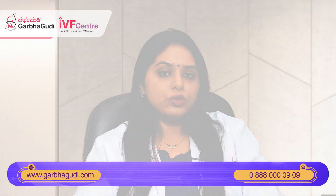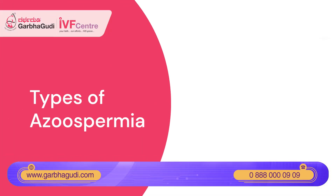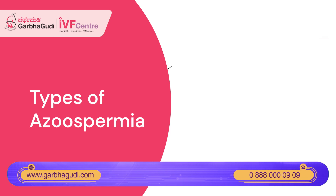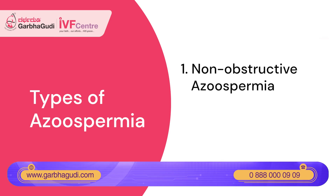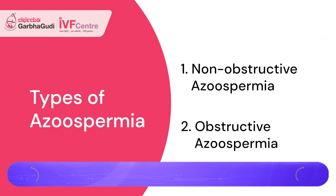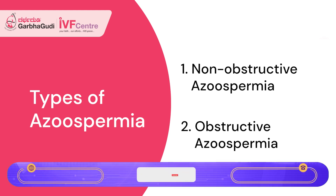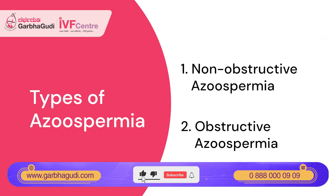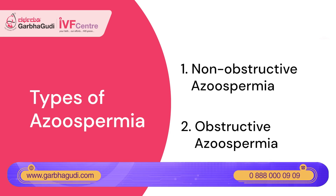Coming to types of Azoospermia, there are two categories. One is failure of production of sperms by the testis — this is called non-obstructive Azoospermia. The second is obstructive Azoospermia, where there is production of sperms but these sperms are unable to reach the semen and come in the ejaculate because of an obstruction somewhere.